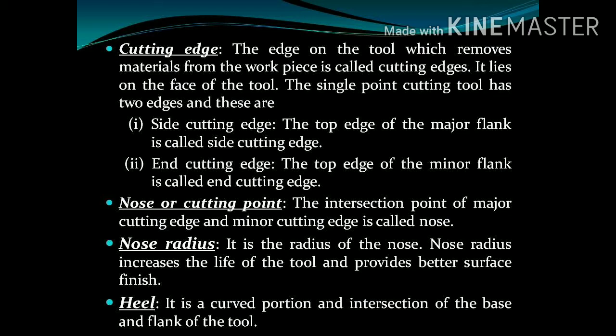The next part of tool is nose or cutting point. It is the point at which the two cutting edges, that is major and minor cutting edges, intersect each other. The radius of the nose is known as nose radius. Moving on, the next portion at which base and flank intersect each other is known as heel. So, these all are the basic parts of single point cutting tool.